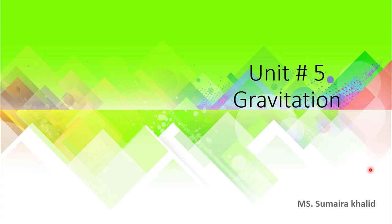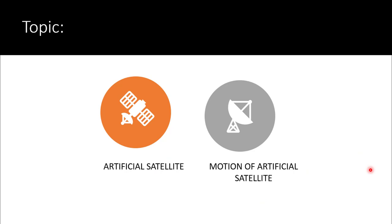Bismillahirrahmanirrahim. Assalamu alaikum students. We are doing unit number 5, that is gravitation. Today the last topics we are going to discuss are artificial satellite and the motion of artificial satellite. We will learn what a satellite is, how many types of satellites there are, what artificial satellites are, and how we can find the motion of artificial satellite with the help of Newton's law of gravitation. So let's proceed.